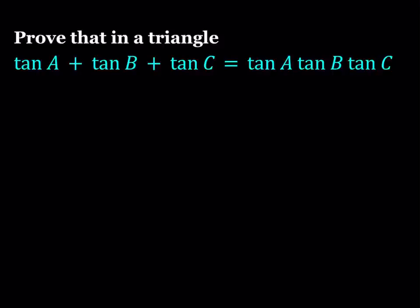Hello everyone. In this video, we're going to be proving a trigonometric identity. Prove that in a triangle, tangent A plus tangent B plus tangent C equals tangent A times tangent B times tangent C. ABC is a triangle — it doesn't have to be a right triangle — and we're going to prove that this identity holds for any triangle. I'm going to be presenting two methods. Let's take a look at the first one.